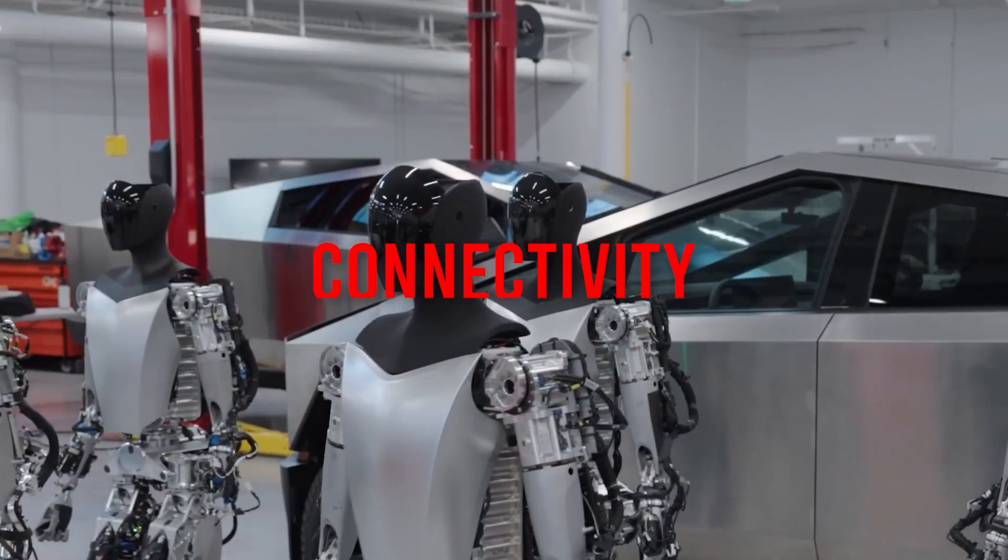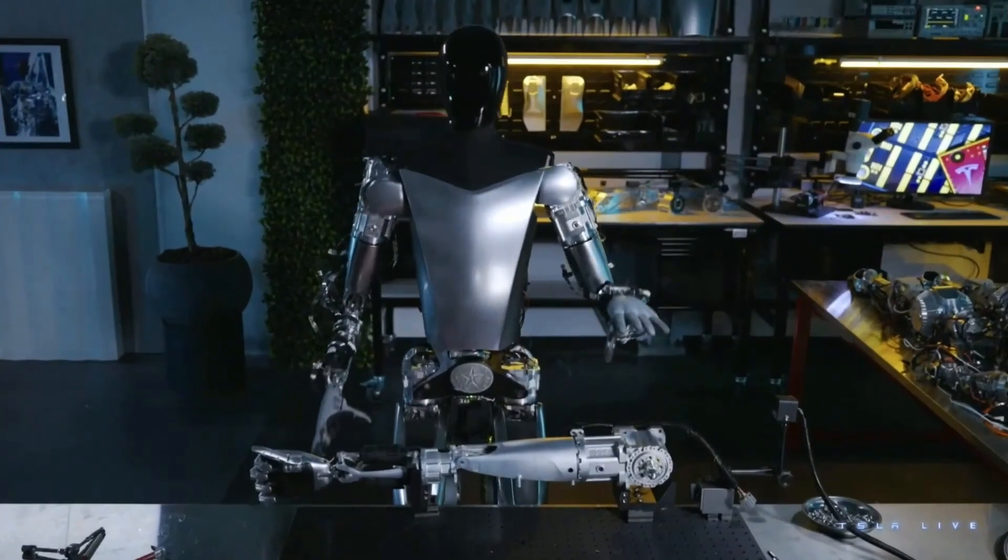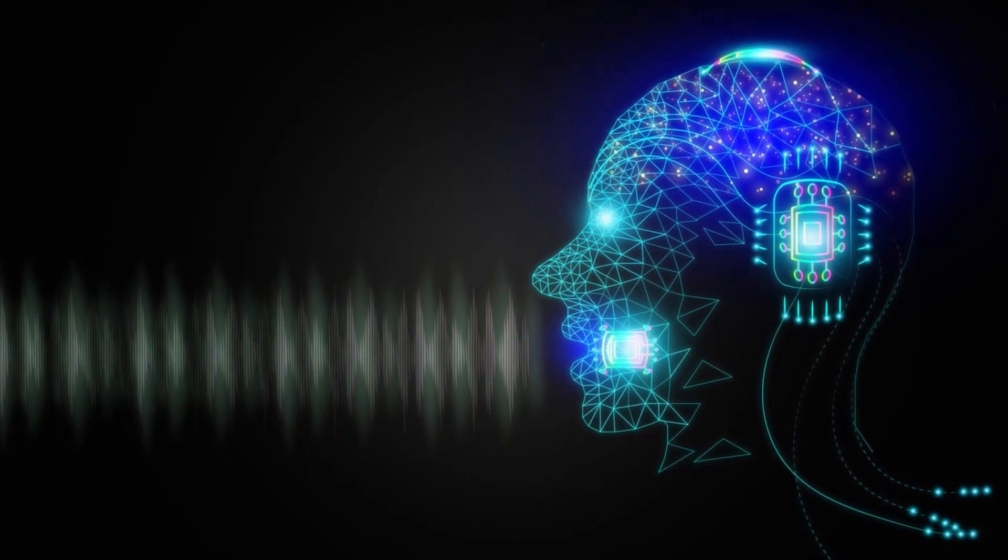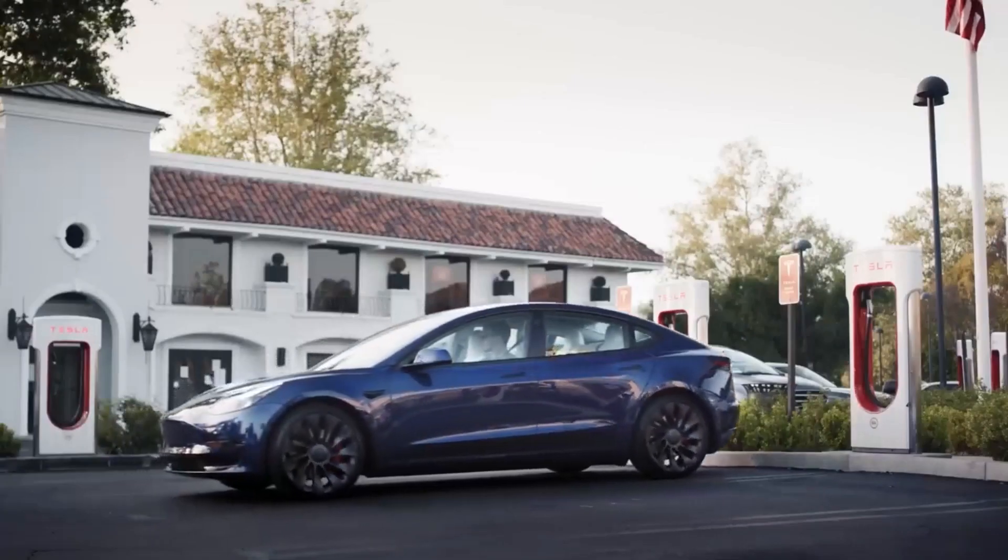Connectivity: Optimus can connect to the internet via Wi-Fi or LTE and communicate with other devices or humans using voice, text, or messages. It can also access Tesla's cloud services and network of superchargers.